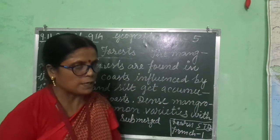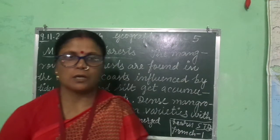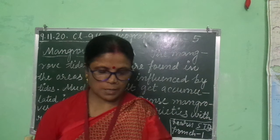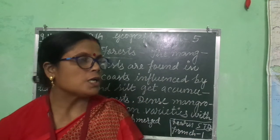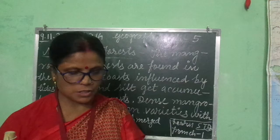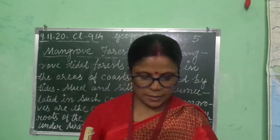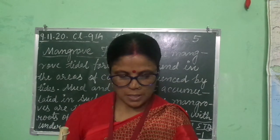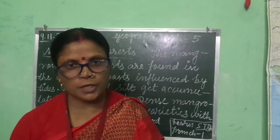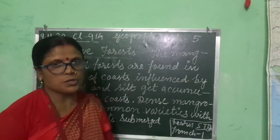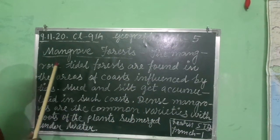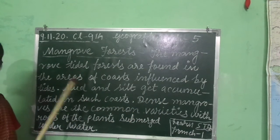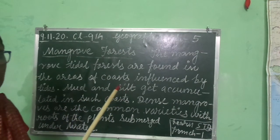We are on chapter 5 and we have already studied about types of vegetation. In types of vegetation, we studied about tropical evergreen forest, the second one that is tropical deciduous forest, and third one that is tropical thorn forest and scrubs. We also studied about mountain forest. Today we are going to start the last one, mangrove forest.